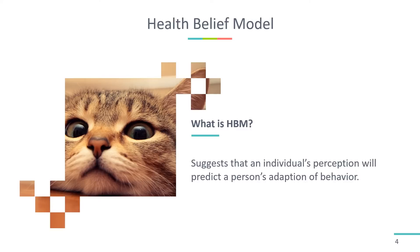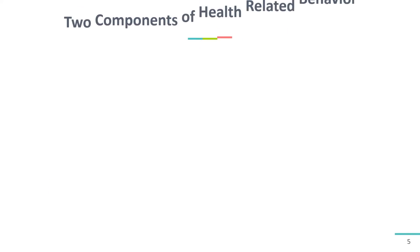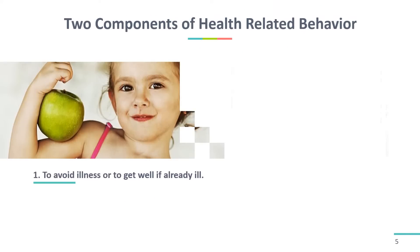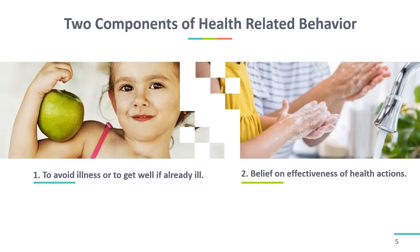The Health Belief Model derives from psychological and behavioral theory with the foundation that the two components of health-related behaviors are: first, the desire to avoid illness, or conversely get well if already ill; and second, the belief that a specific health action will prevent or cure illness. Ultimately, an individual's course of action often depends on the person's perception of the benefits and barriers related to health behavior.